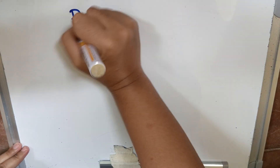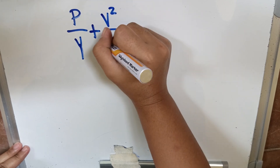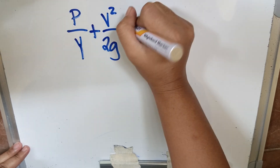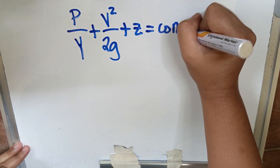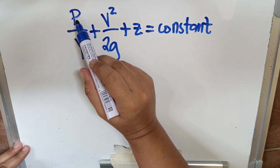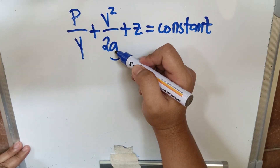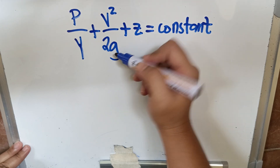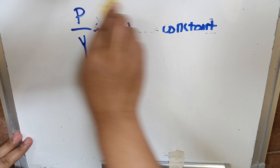The Bernoulli equation is: P over gamma plus V squared over 2g plus Z equals constant, where P is the pressure, gamma is the specific weight, V is the velocity, g is the acceleration due to gravity, and Z is the elevation. Now let's start by applying Bernoulli's equation from point 1 to point 3.